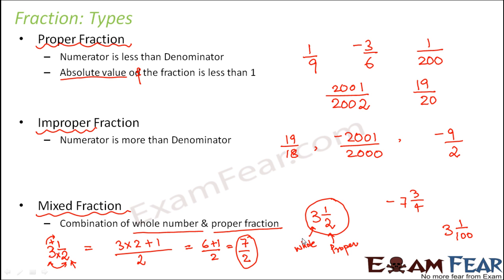For example, how do you write 3 and 1/100 as an improper fraction? You multiply 100 × 3, then add 1, keeping the denominator as 100. So this gives 301/100, which is again an improper fraction.